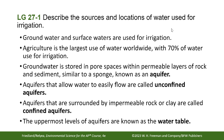Aquifers that allow water to easily flow are called unconfined aquifers — they're not really contained, water is moving in and out freely. Aquifers surrounded by impermeable rock or clay are called confined aquifers. Think of a confined aquifer like an underground pond — it's surrounded by clay, which is not very permeable, so the water just sits there.